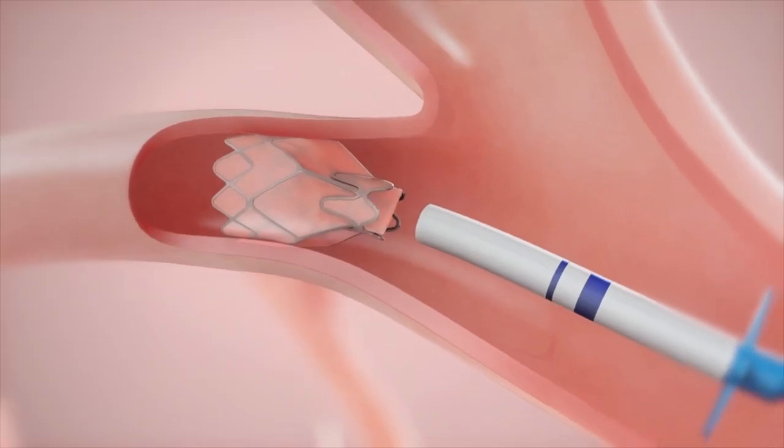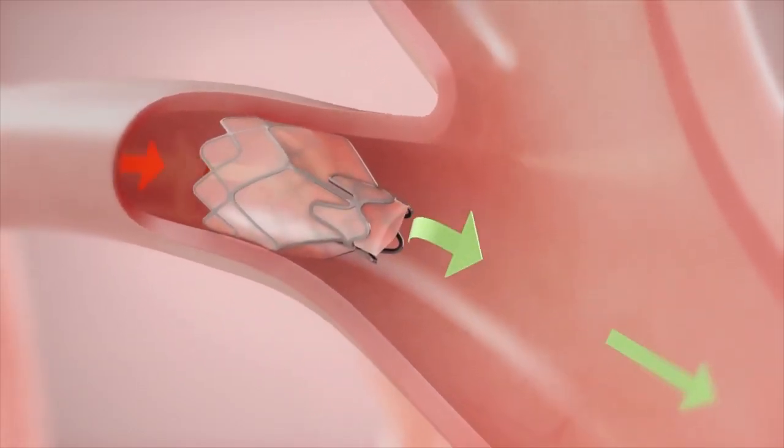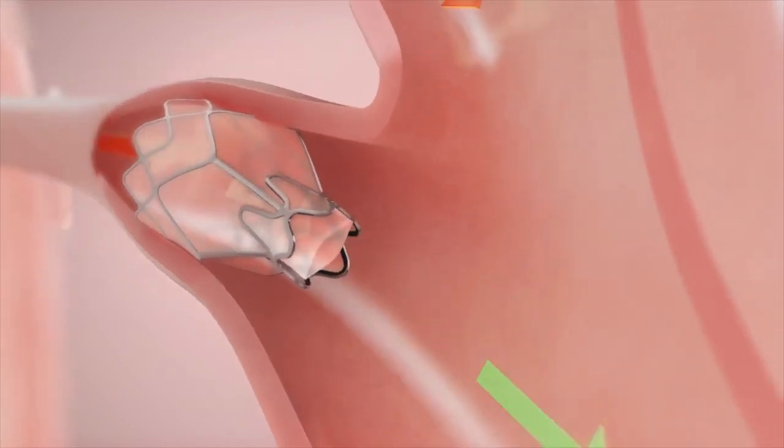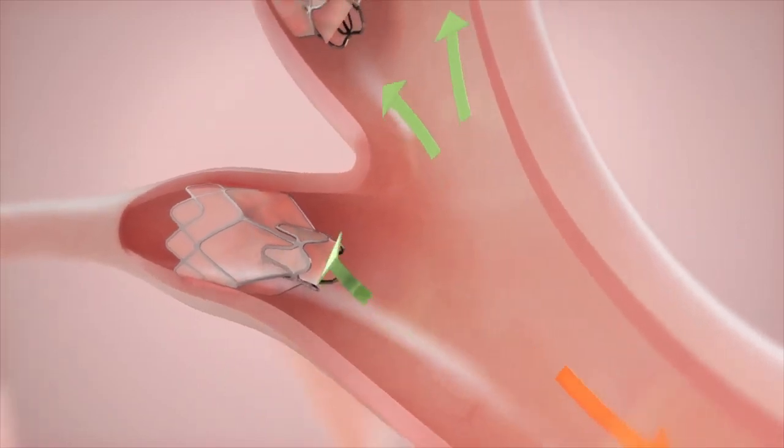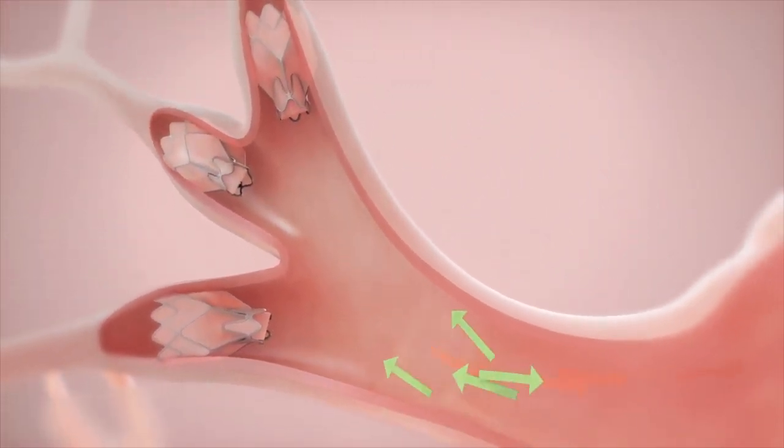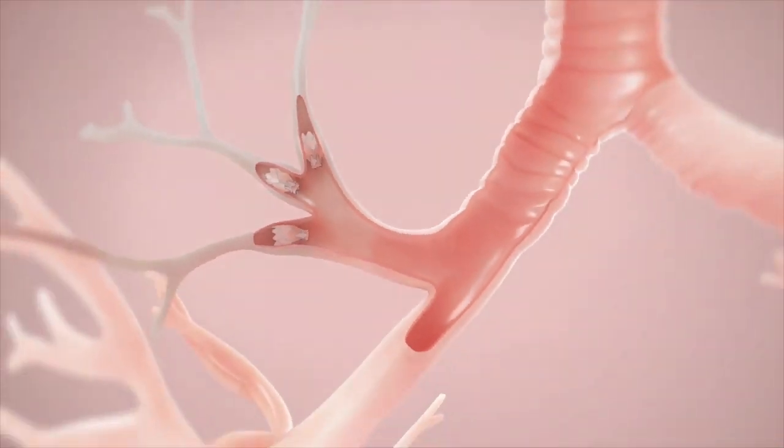Multiple valves are implanted to ensure complete occlusion of all airways leading to the target lobe of the lung. Valves may be placed at the lobar, segmental or subsegmental levels dependent on the airway anatomy. Trapped air in the treated lobe escapes through the Zephyr valves until the lung volume of the treated lobe is reduced.